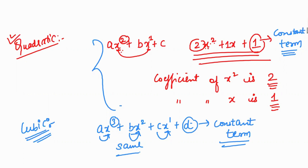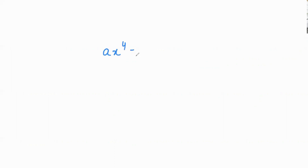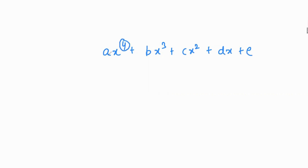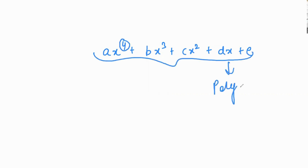Is that concept clear? Next, if you have given more than three powers — like ax to the power 4 plus bx cubed plus cx squared plus dx plus e — the highest power is 4. These types of equations are known as polynomials.